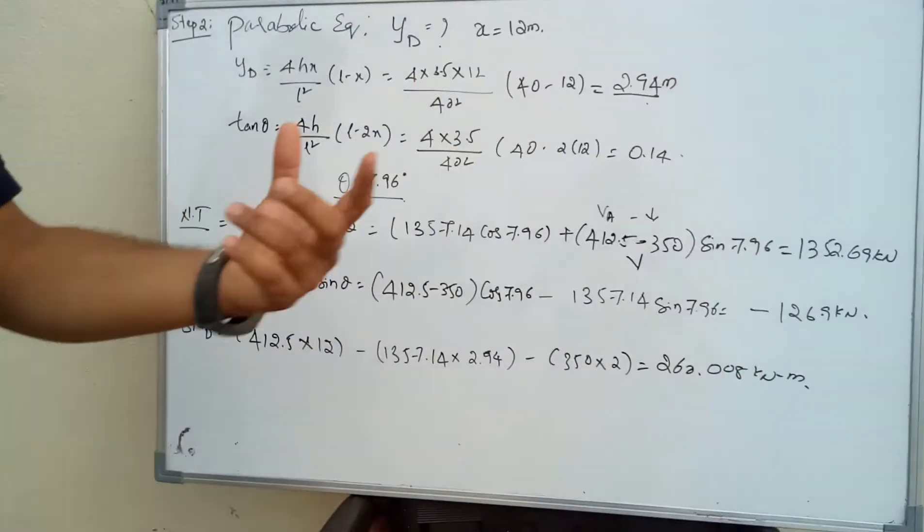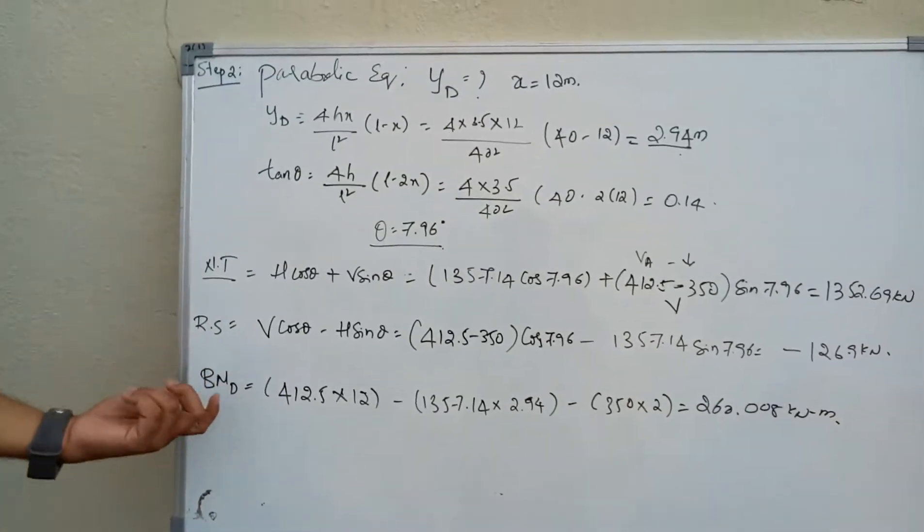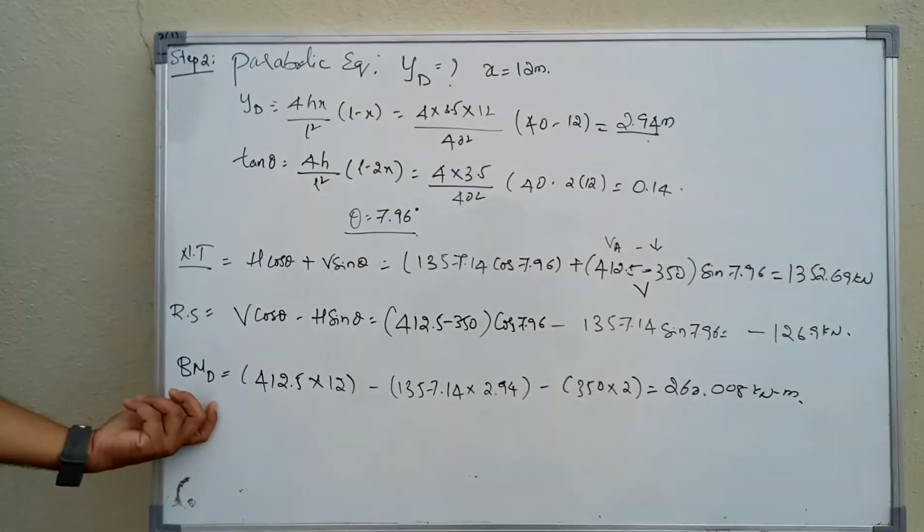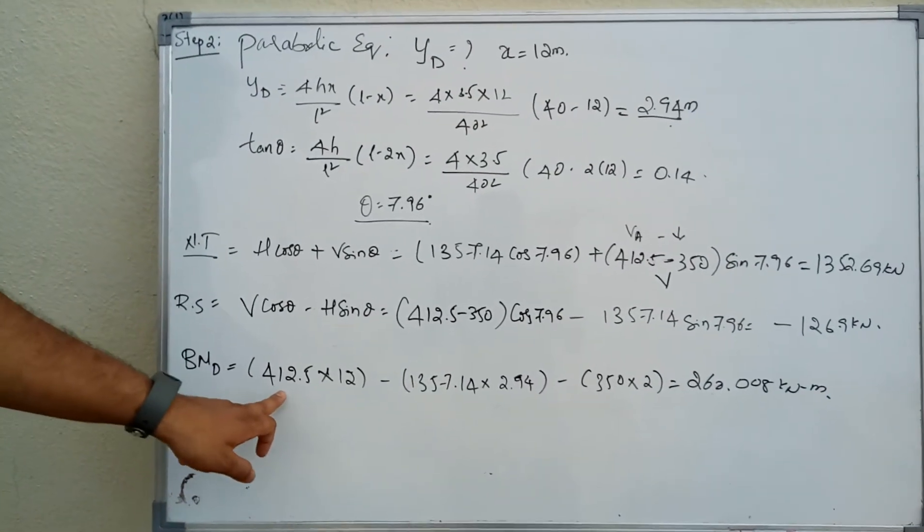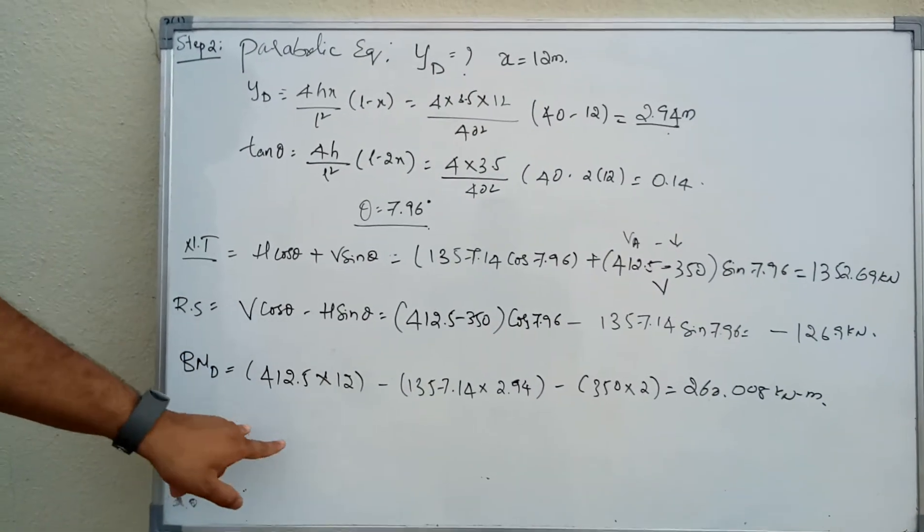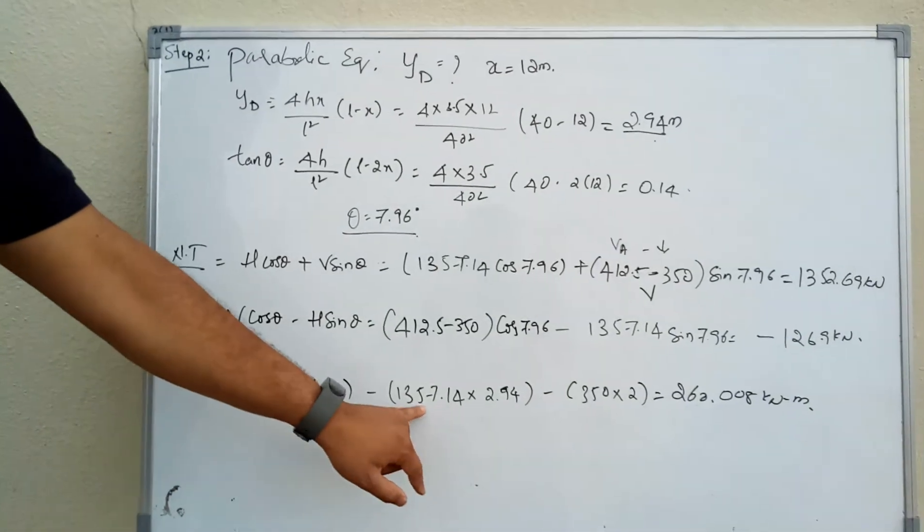Finally, we need to find the moment at D. Moment at D equals 412.5 into 12, that is VA into 12, minus HA into 2.94, minus 350 into 2. The answer is 260 kilonewton-meters.